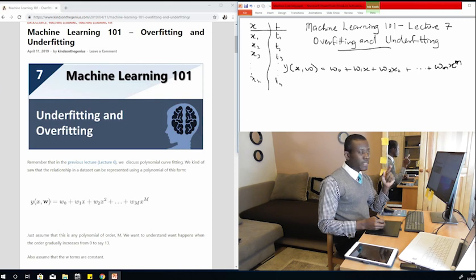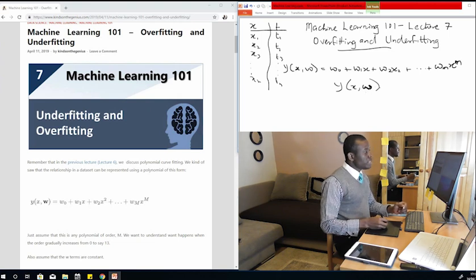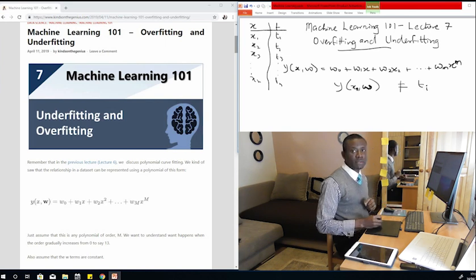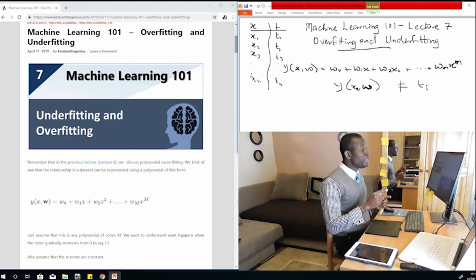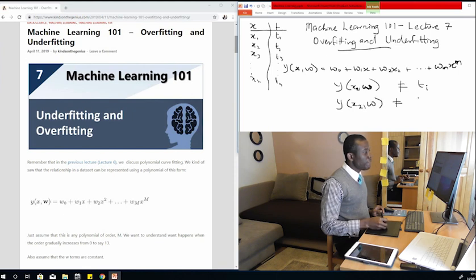When you use this method, you calculate a value of y which is y(x,w), where w is in bold, which means it's a vector of all the coefficients. Now this y(x1,w) is not the same as t1. Because normally if you calculate y for x1, it should be exactly t1, but it's not the same.